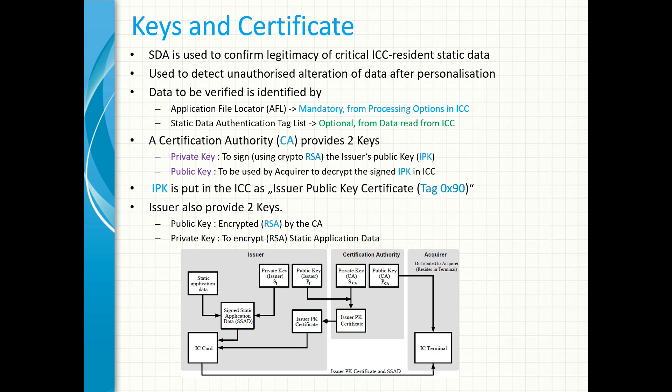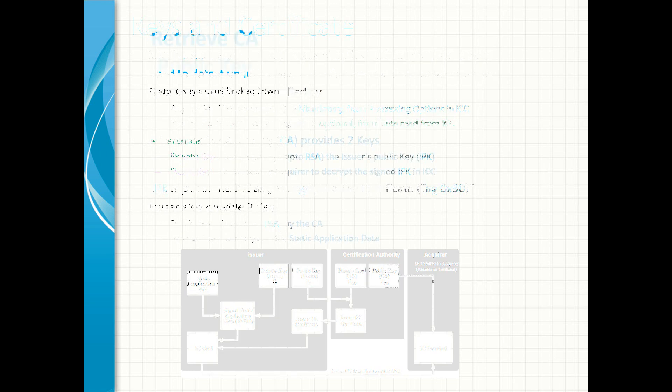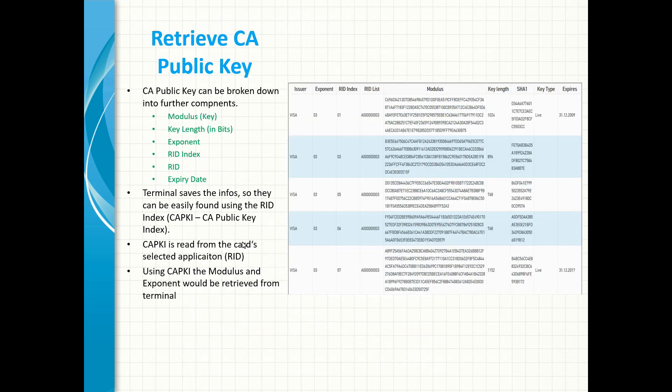In cryptography, the security of data depends on how complex the key is, so there is mostly a private key depending on the cryptographic algorithm used to encrypt data. In EMV cards, only RSA is used to encrypt data.